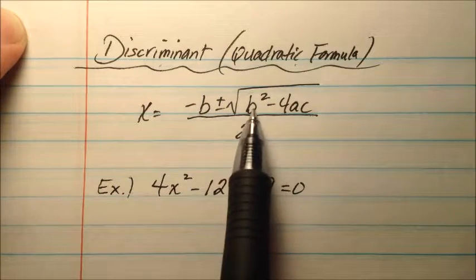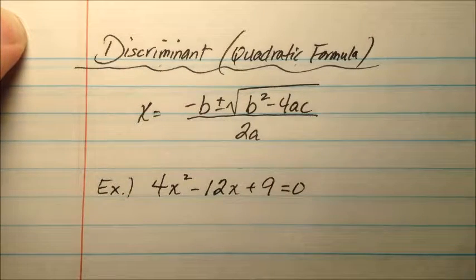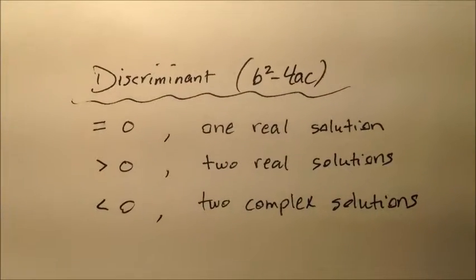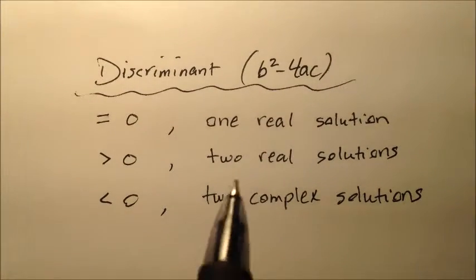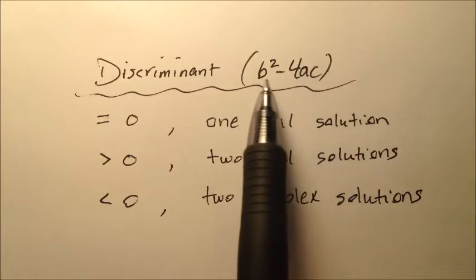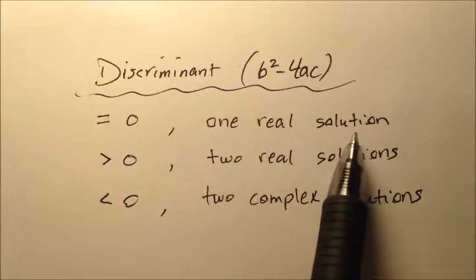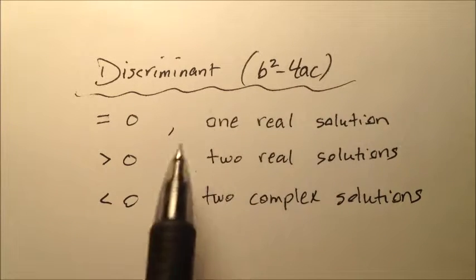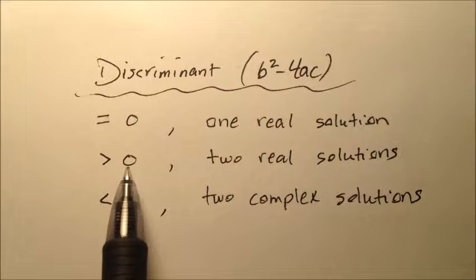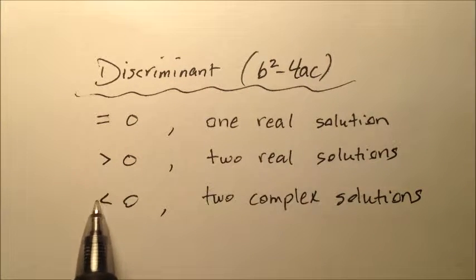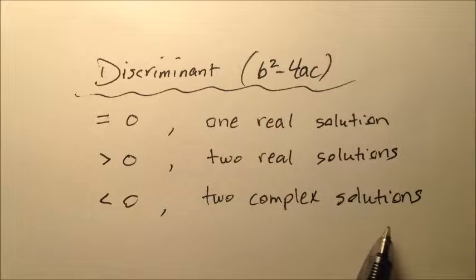Depending on what b squared minus 4ac yields, you'll know what kind of roots the quadratic equation will give you. We have a chart we can use: if b squared minus 4ac equals zero, the equation has one real solution; if it's greater than zero, you have two real solutions; and if it's negative, you have two complex solutions.